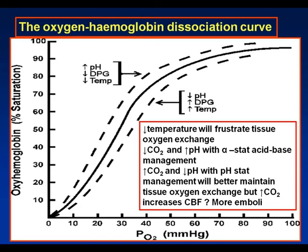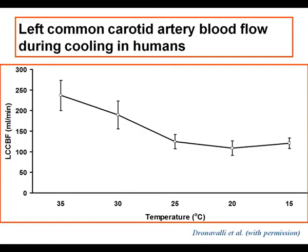We have been doing studies in which we have been instrumenting patients with jugular bulb catheters, a left common carotid flow probe, and various monitoring devices. This is some cumulative data from this project. We can see that in patients of about 70 kilograms, they start at 35 degrees centigrade with left common carotid blood flow of roughly 250 mils per minute.